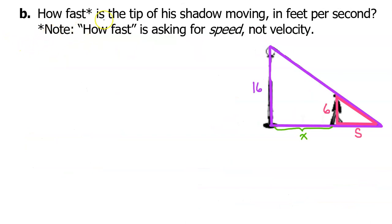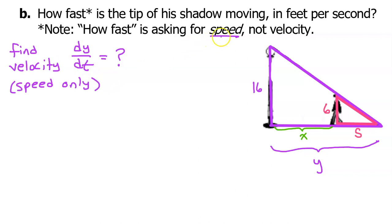Part B. How fast is the tip of his shadow moving in feet per second? Note how fast is asking for speed, not velocity. Let's introduce a new variable y to represent the distance from the tip of the man's shadow to the lamp post. As the man walks towards the lamp post, the tip of his shadow moves as well, and the length of y decreases. So the velocity of the tip of the shadow will be dy/dt. However, because we are asked for speed, if the velocity turns out to be negative, we will ignore the negative sign and that will be the speed.